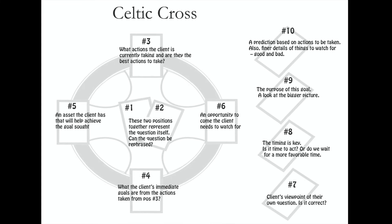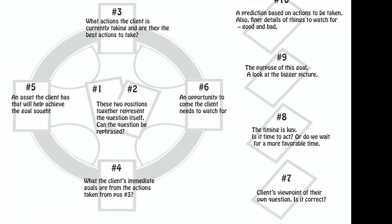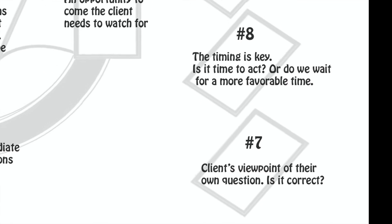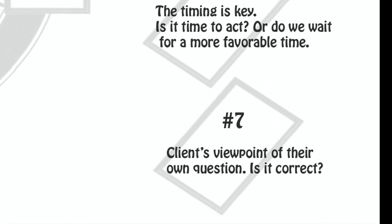Position seven is the client's viewpoint of their own question — is it correct? This allows us to take position seven alongside positions one and two for a hard look at the question and how the client is seeing it. Maybe they're not seeing things exactly the way they really are. It allows us to question the client's view, and to open things up because clients often give a one-sided viewpoint. We can draw things out of them that they didn't tell us originally when they sat down.